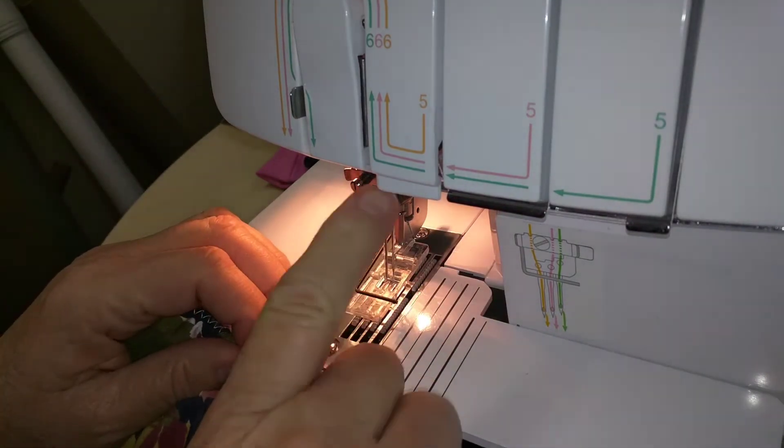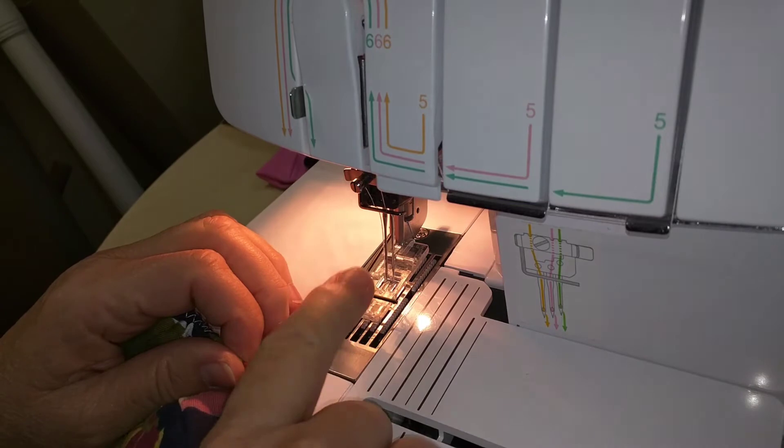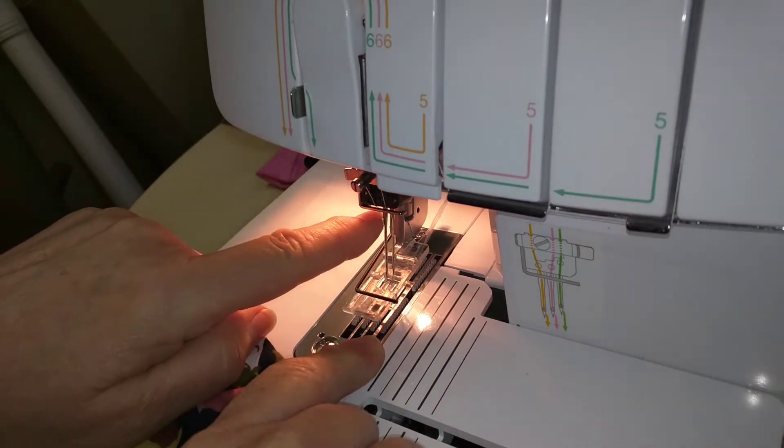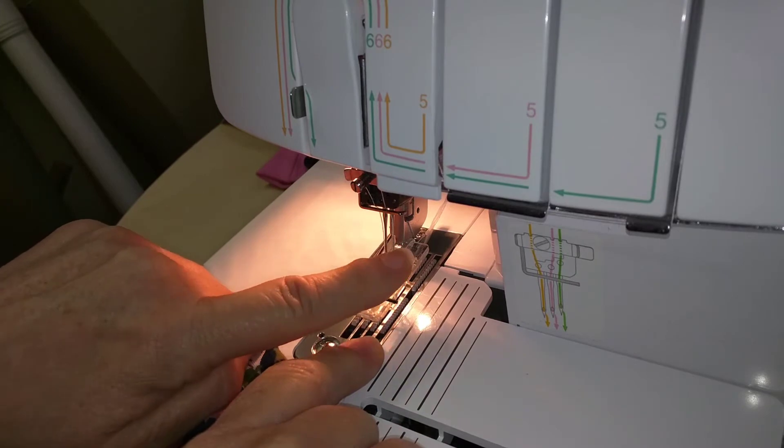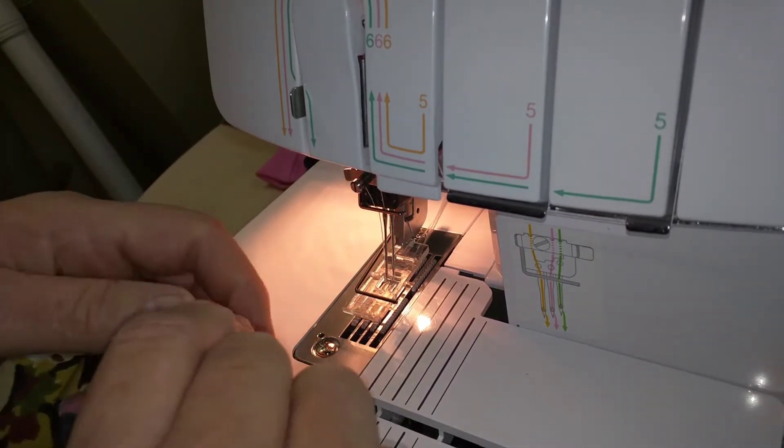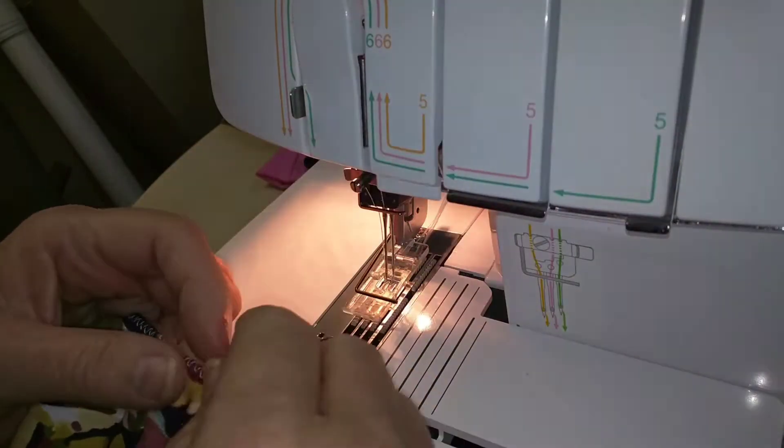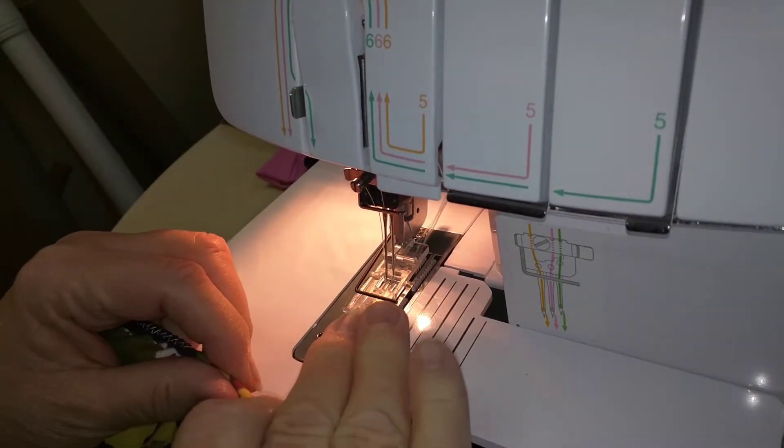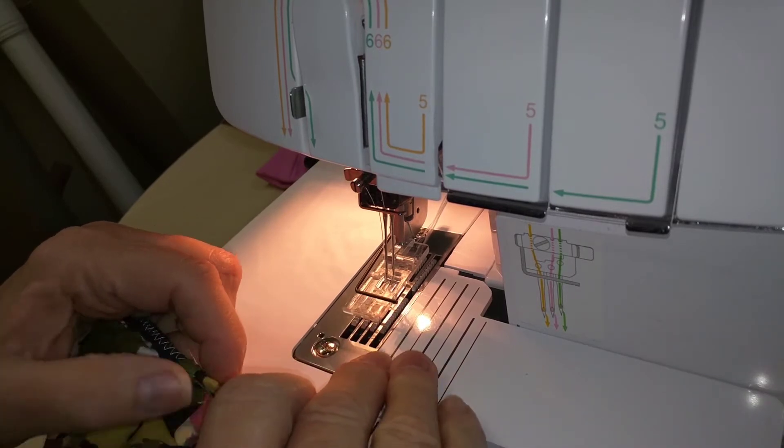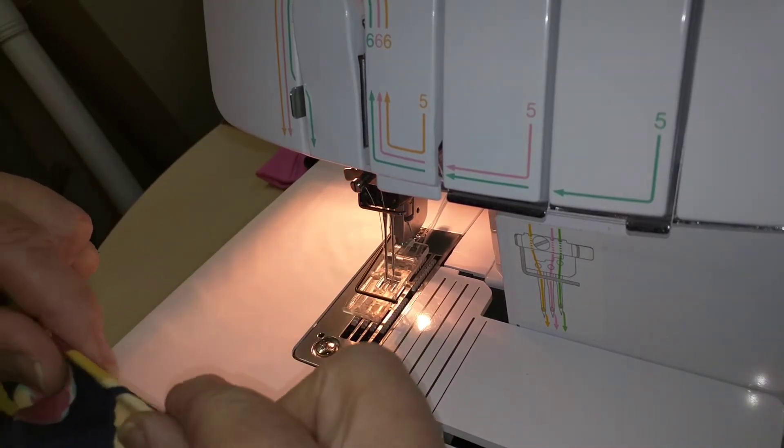My machine, I have a Brother 2340 and it has a three needle capacity, but I'm only going to use the right and the middle. It's a narrow setting. My settings are all at four and I use Maxi Glock stretch in the looper, only in the looper, not in the needles at all.